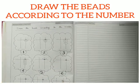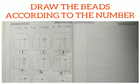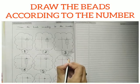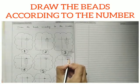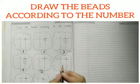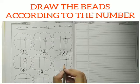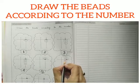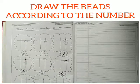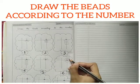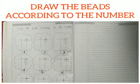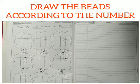Now, for 6, what we have to do? We will draw 1 upper bead which has a value of 5 and 1 lower bead. It is 5 plus 1, that is 6.